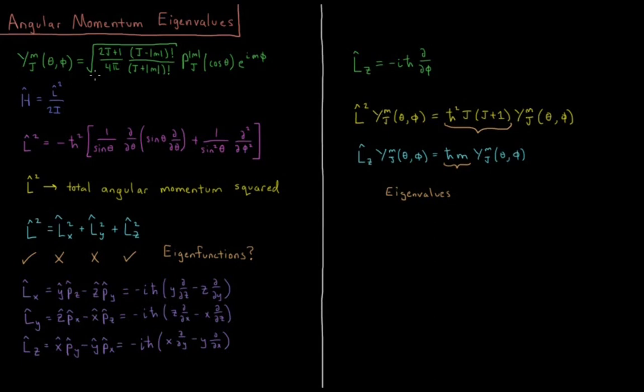So we have an eigenvalue equation for both of them. L-squared of y j m theta phi equals h-bar squared j times j plus 1, quantum number j, times the same function y j m of theta phi. For Lz, we have Lz acting on y j m of theta phi equals h-bar m y j m of theta phi.